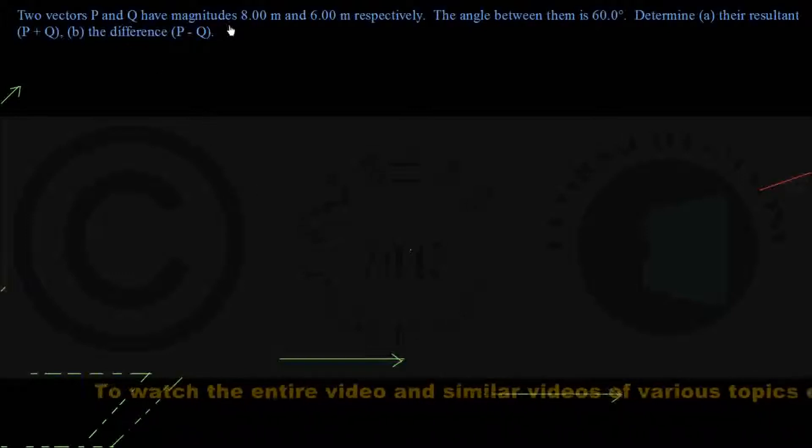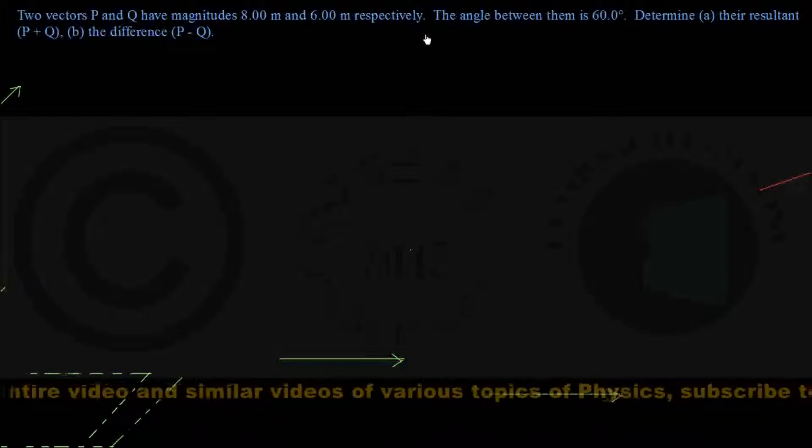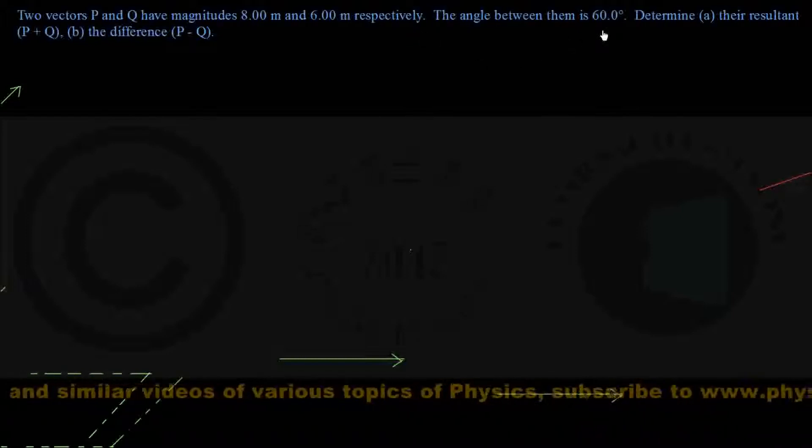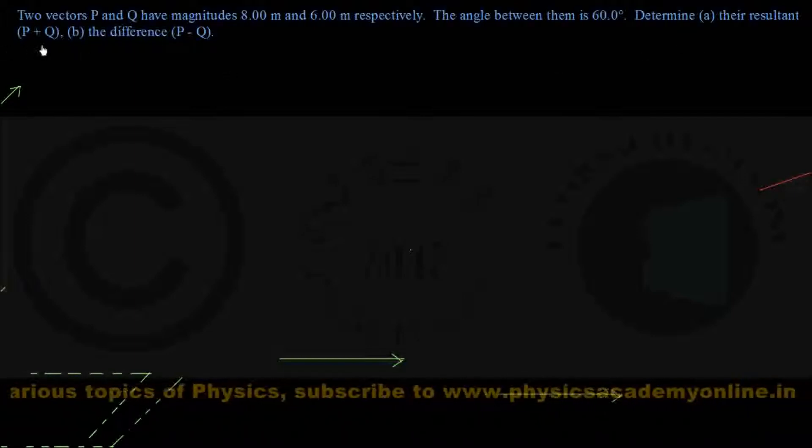Two vectors P and Q have magnitudes of 8 meters and 6 meters respectively. The angle between them is 60 degrees. Determine their resultant P plus Q and the difference P minus Q.